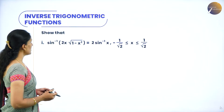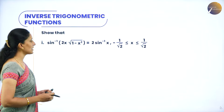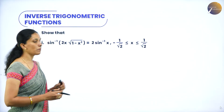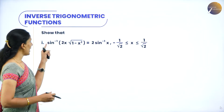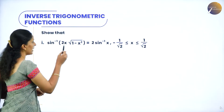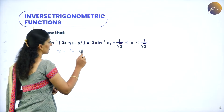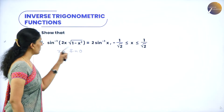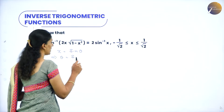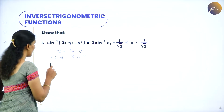The first question is: prove that sin inverse of 2x√(1 - x²) is equal to 2 sin inverse x. We have a sin inverse function and 2 sin inverse x. So let me take x is equal to sin theta, which implies theta is equal to sin inverse x. Now let us take the LHS.